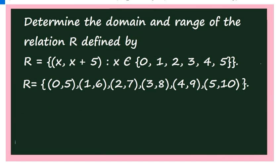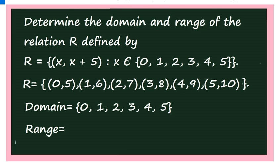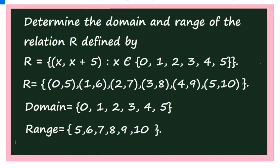Now, what is the domain? Collection of all first elements: 0, 1, 2, 3, 4, 5. That is the domain. And what is the range? The second elements: 5, 6, 7, 8, 9, 10. So the range is {5, 6, 7, 8, 9, 10}.